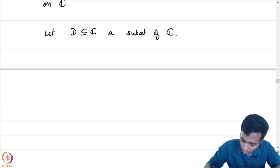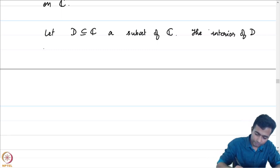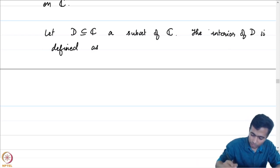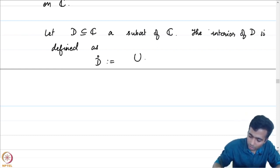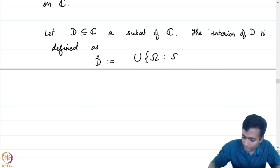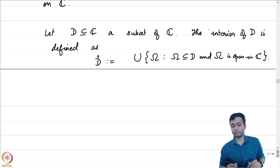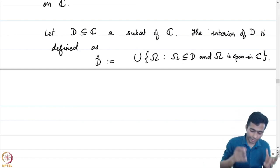The interior of D — sometimes also denoted with a circle on top — is defined as the union over all omega such that omega is contained in D and omega is open in C. The union over all open sets contained in D is called the interior of D.